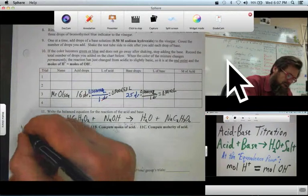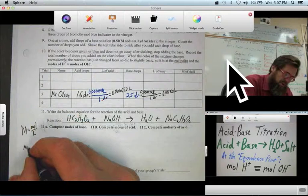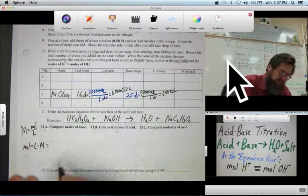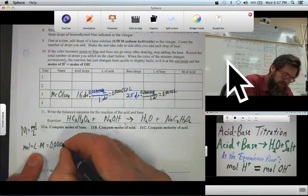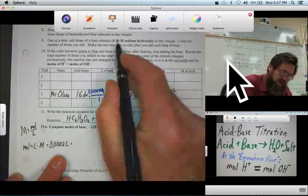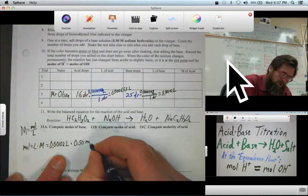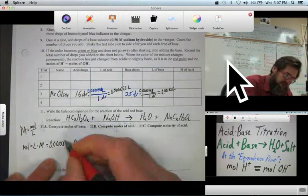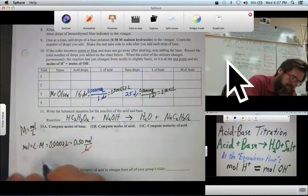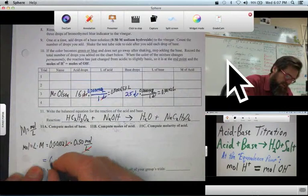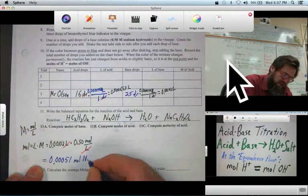How do we compute the moles of base? Well, I know molarity equals moles over liters. So moles equals liters times molarity equals substitute the liters of base. 0.00102 liters times the molarity, 0.50 moles per liter. Why do I write that out? So I can cancel and see explicitly that I get the liter. So that comes out to 0.00051 moles of NaOH.